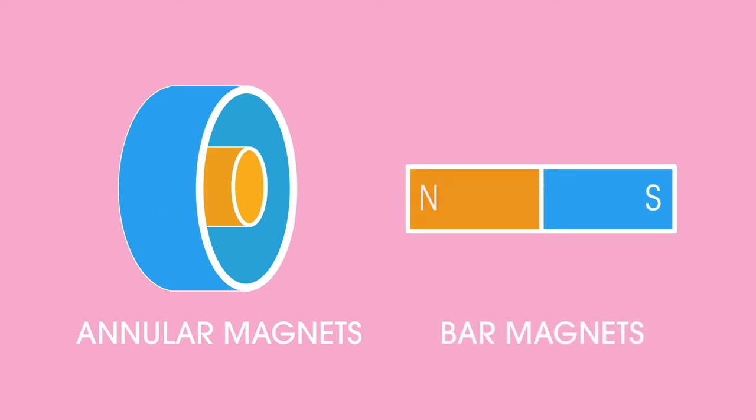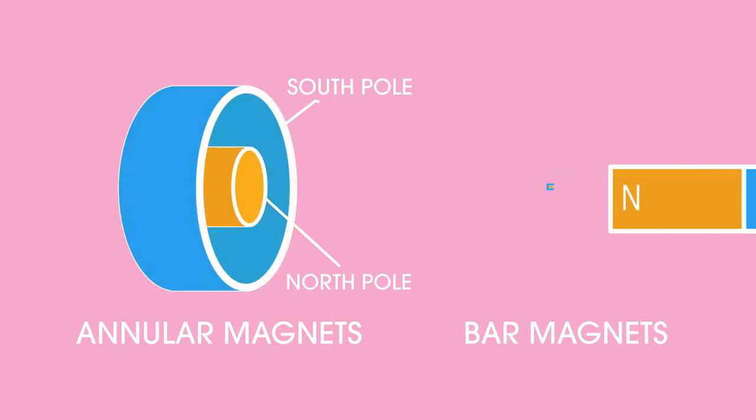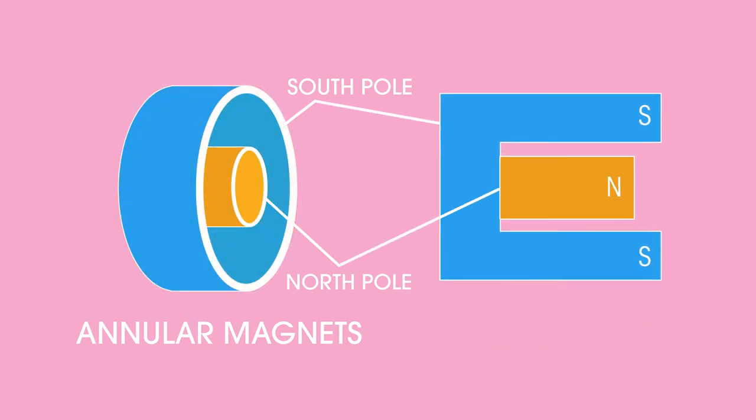In a bar magnet, the ends of the magnet have opposite poles, but in an annular magnet, the central core has the opposite pole to the cylinder surrounding it. These are the main parts of a loudspeaker.